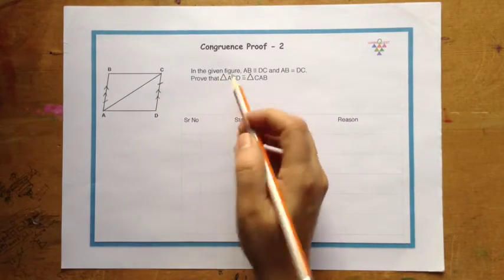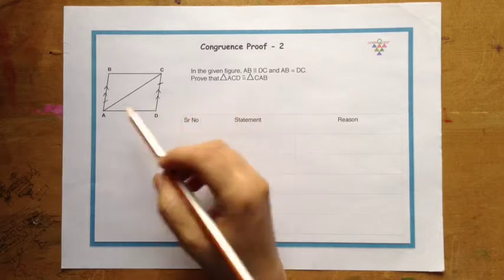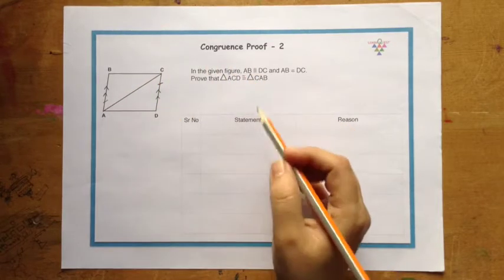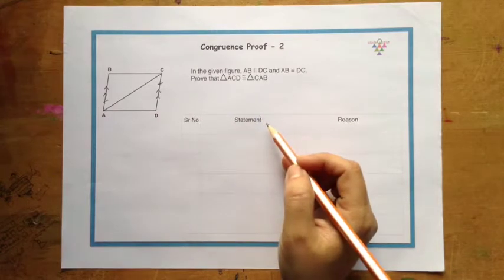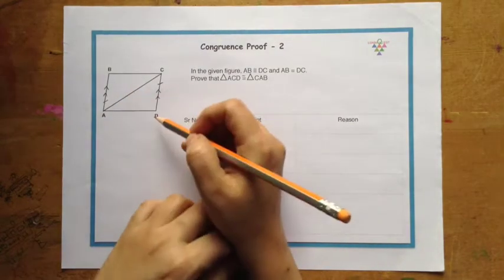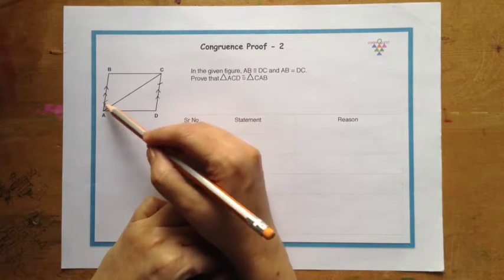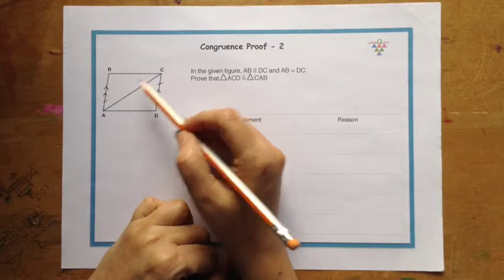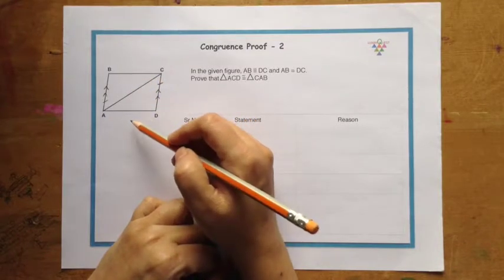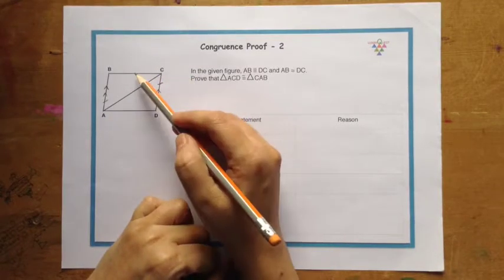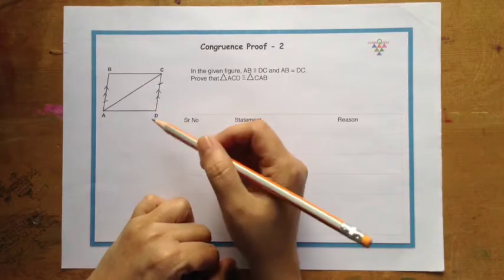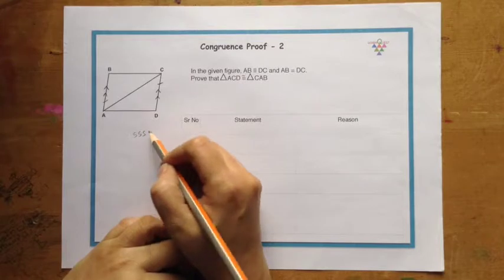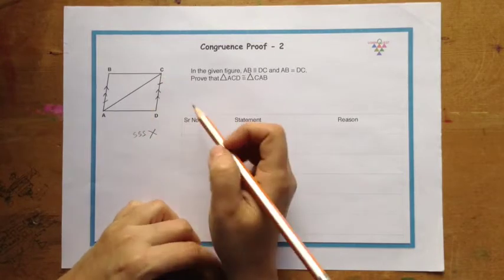Now we have to prove that triangle ACD and triangle CAB are congruent. If we look at these triangles, we know that this side is equal to this side and this is a common side. So two sides are given to be equal to each other and nothing is told about these sides. So we definitely cannot use SSS criteria because the third side is not given.